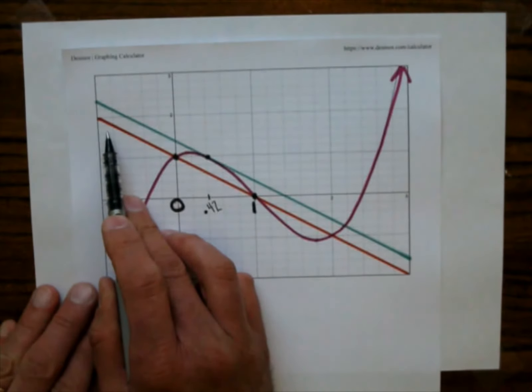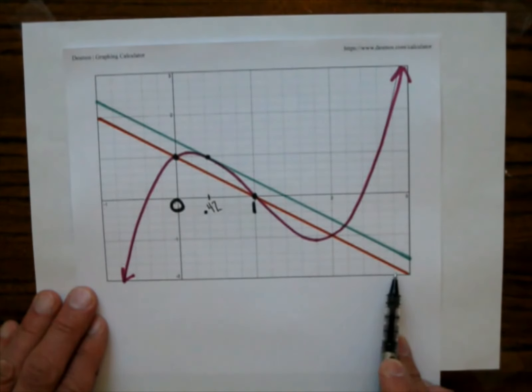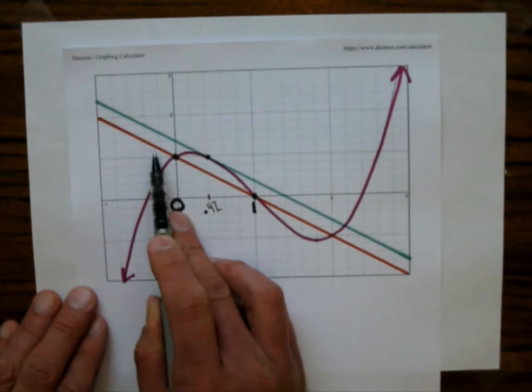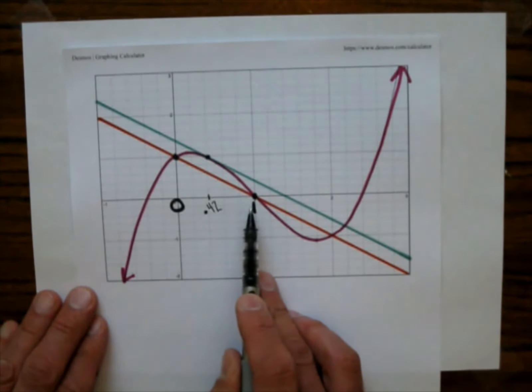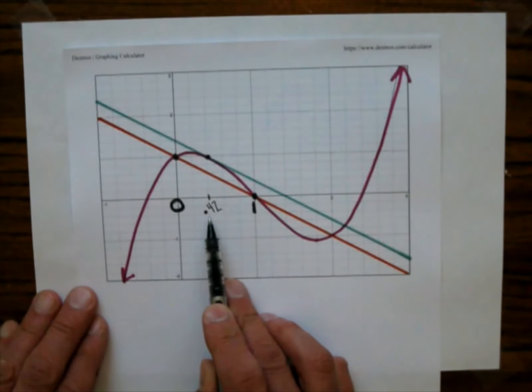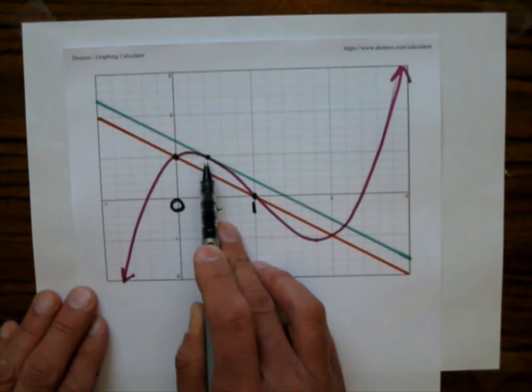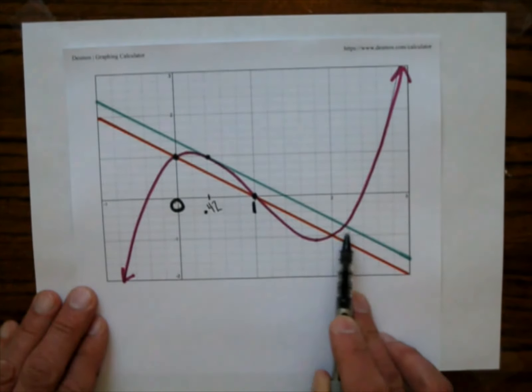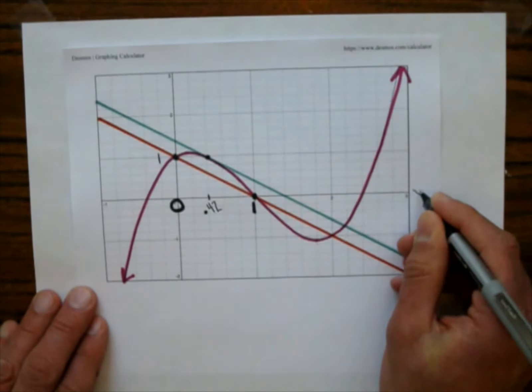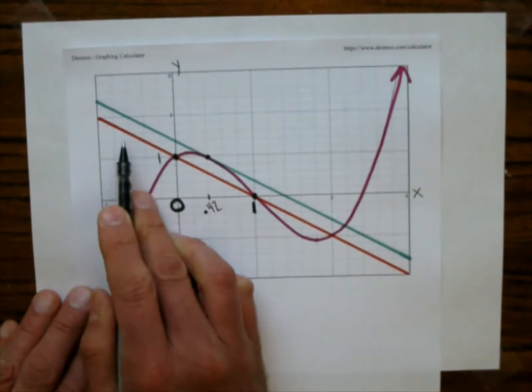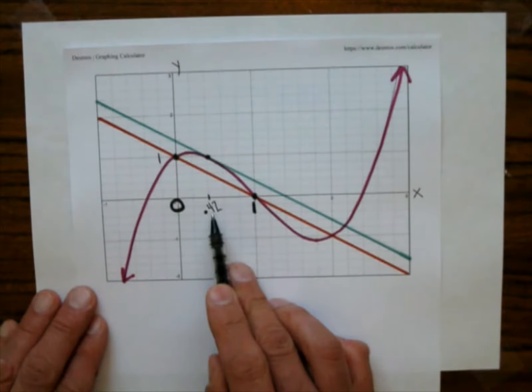So the secant line, which is this orange line, has a slope of negative 1. It doesn't look like that because my scaling is different on both axes. So that represents the average velocity in the time interval 0 to 1. Well, here's the point, 0.42, which is right here. And you draw the tangent line, it gives you slope of negative 1. And I know that doesn't look like a slope of negative 1. But like I said, the scaling, there's 1 there and there's 1 there. So the scaling is a little different. But you can see that the slope of the tangent line, which is green, equals the slope of the secant line, which is orange. And we were able to find something in there.